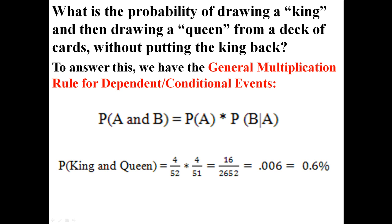The probability of getting a king and then a queen: the probability of A is 4 out of 52 because there are 4 kings in the deck of 52 cards. The probability of B having drawn A already is 4 out of 51, because there are 4 queens in the deck but now only 51 cards left since you've already taken out the king. Multiplying those two gives 16 divided by 2,652, which is about 0.6% — there's a 0.6% chance that you will draw a king and then a queen.